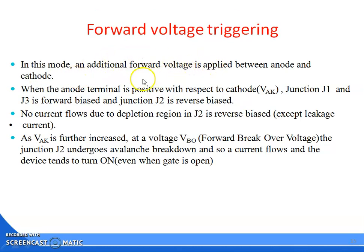Let us come to the forward voltage method of triggering. In this mode, an additional forward voltage is applied between anode and cathode. When anode terminal is positive with respect to cathode, junctions J1 and J3 are in forward biasing mode, junction J2 is in reverse biasing mode. No current flows due to the depletion region in junction J2 being reverse biased. As anode-cathode voltage is further increased to the voltage VBO, that is forward breakover voltage, the junction J2 undergoes avalanche breakdown and current flows. The device tends to turn on even when the gate circuit is open.